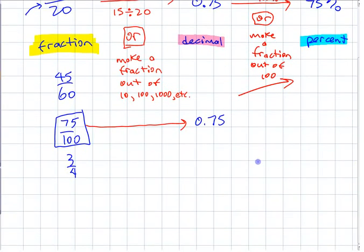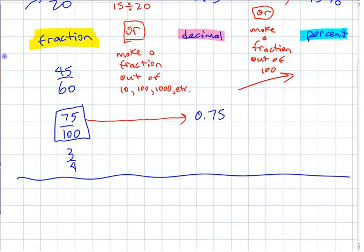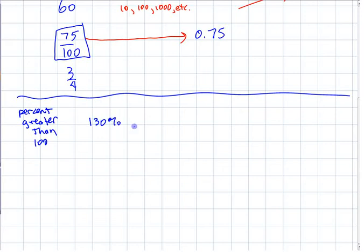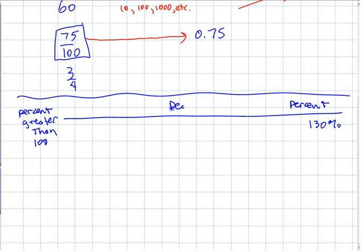The focus of this chapter is not a nice easy percent like 75 out of 100. The focus in Grade 8 is three different things. We have percentages greater than 100, like 130%. Let's make a table: percent over here, decimal over here, and fraction.